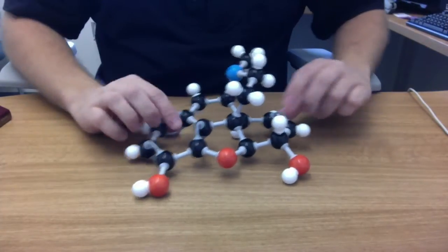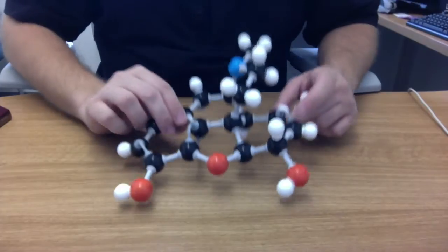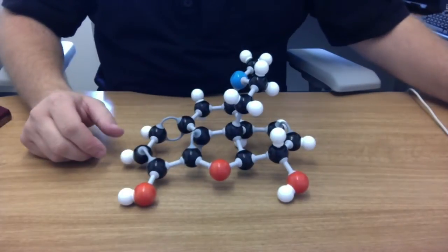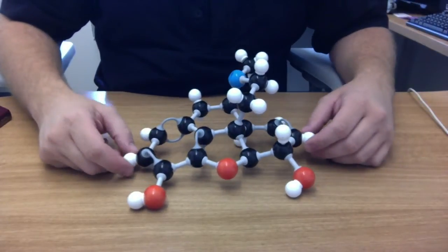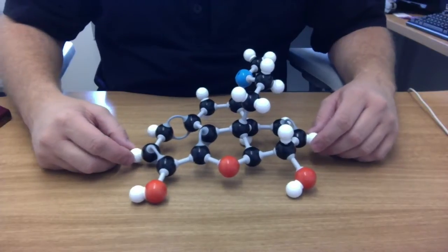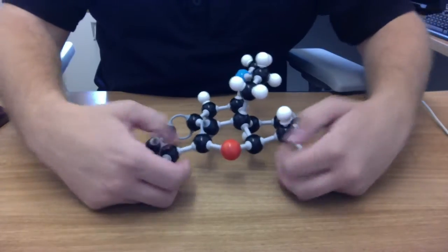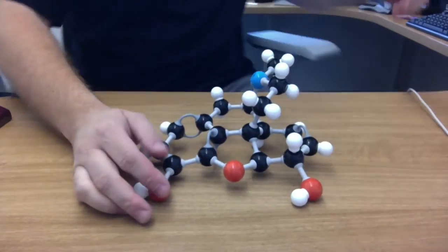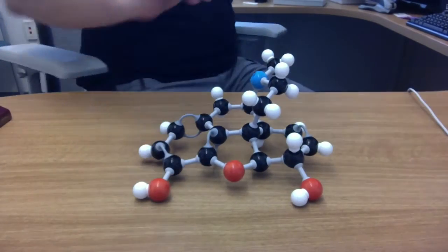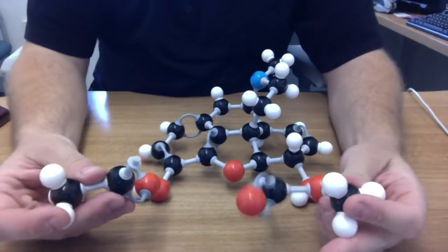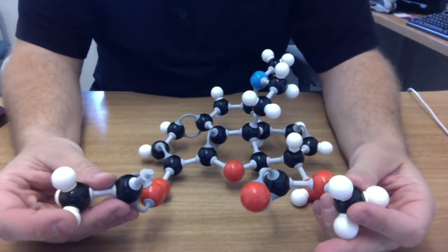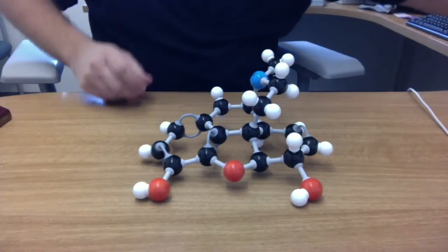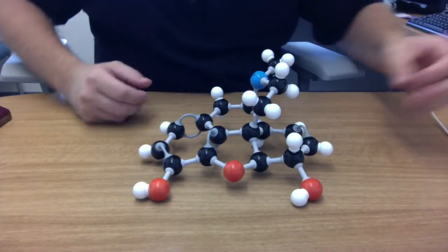So on the last video we talked about this little guy here, morphine, and then I modified morphine a little bit. I made a semi-synthetic opioid by replacing the hydroxyl groups with acetyl groups, I acetylated it, and that created the molecule heroin.